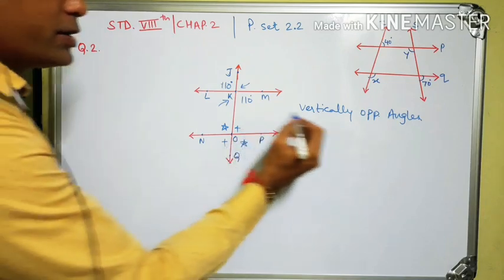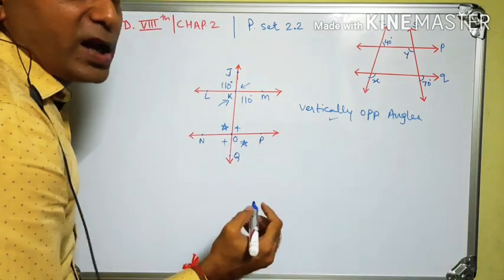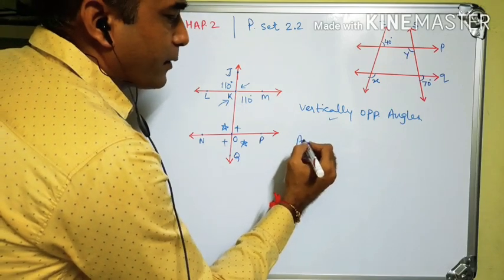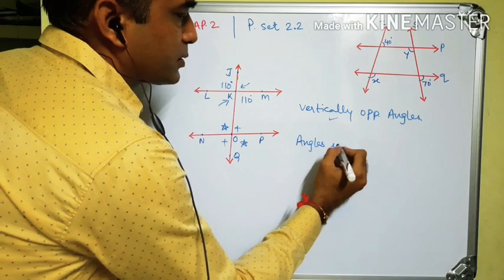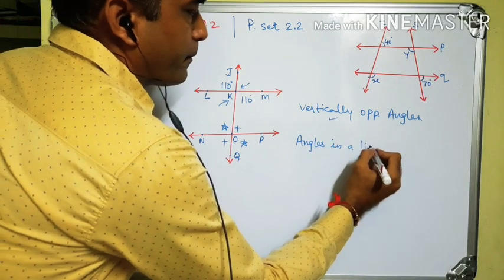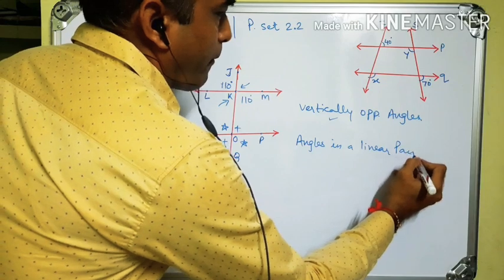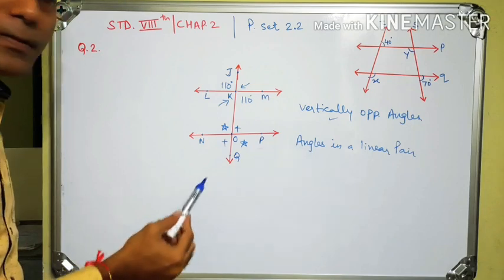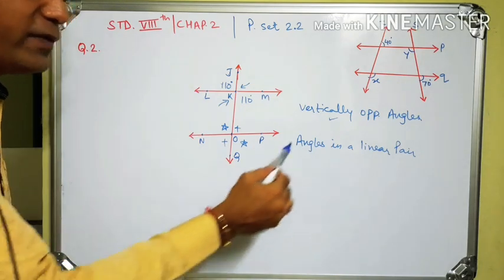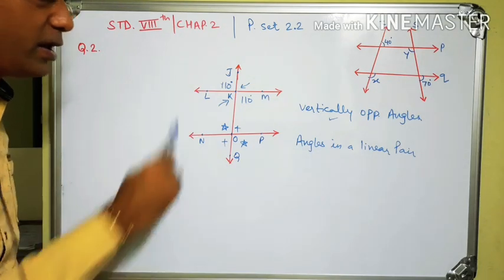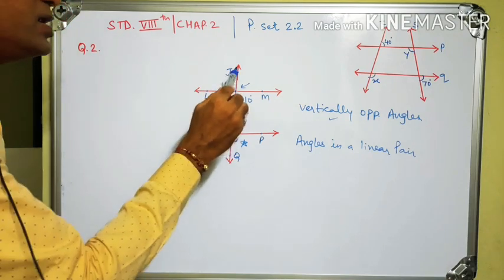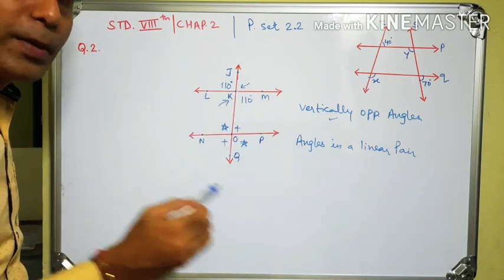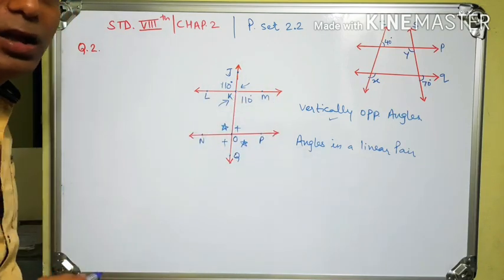There is one more pair of angles to revise: angles in a linear pair. Can you find angles in a linear pair in this diagram? Angle JKL and angle JKM form one pair of angles in a linear pair.